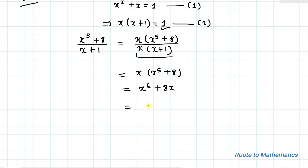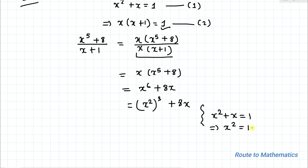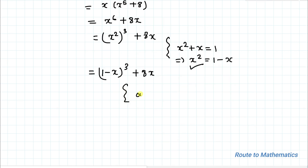Now x⁶ can be written as (x²)³, since 2 × 3 = 6, so we have (x²)³ + 8x. From equation 1, x² + x = 1, which implies x² = 1 − x. Substituting, we get (1 − x)³ + 8x. We'll expand this using the algebraic identity (a − b)³ = a³ − b³ − 3a²b + 3ab².